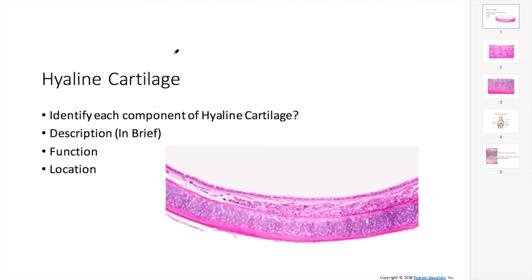In today's lecture, out of the three cartilages in this course — hyaline cartilage, fibrocartilage, and elastic cartilage — I'm going to focus on hyaline cartilage. It is the most prevalent type of cartilage in the human body. It is flexible and resilient in nature, smooth but tough, and forms the temporary embryonic skeleton which is later replaced by bone. Its appearance is glass-like but semi-translucent.